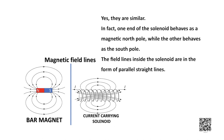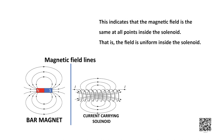Absolutely yes, they are exactly similar to each other. In fact, one end of the solenoid behaves like a magnetic north pole while the other behaves like a south pole. The field lines inside a solenoid are in the form of parallel straight lines. This indicates that the magnetic field is the same at all points inside the solenoid — that is, the field is uniform inside the solenoid.